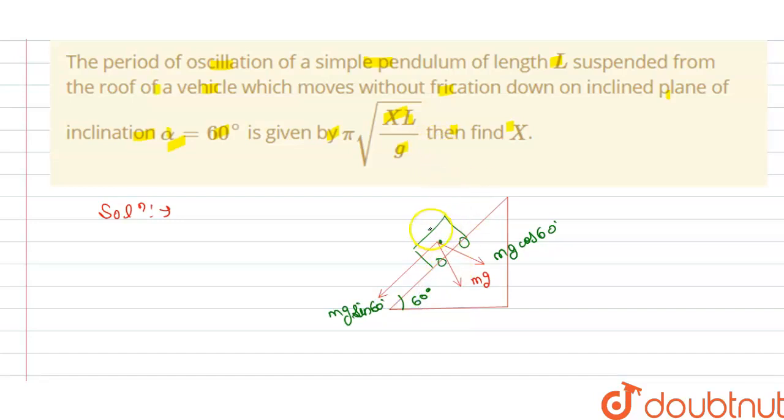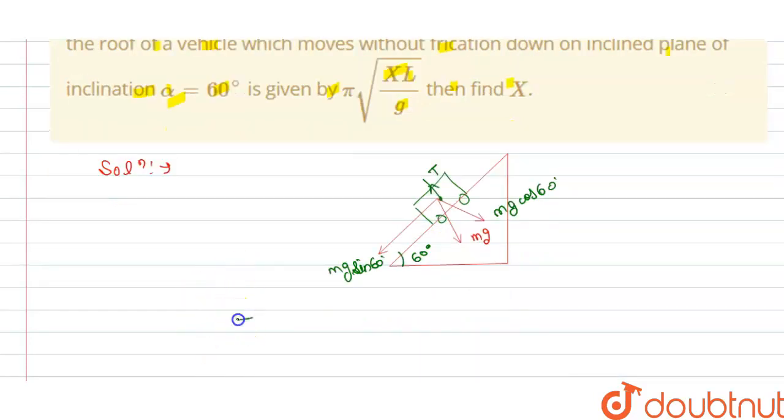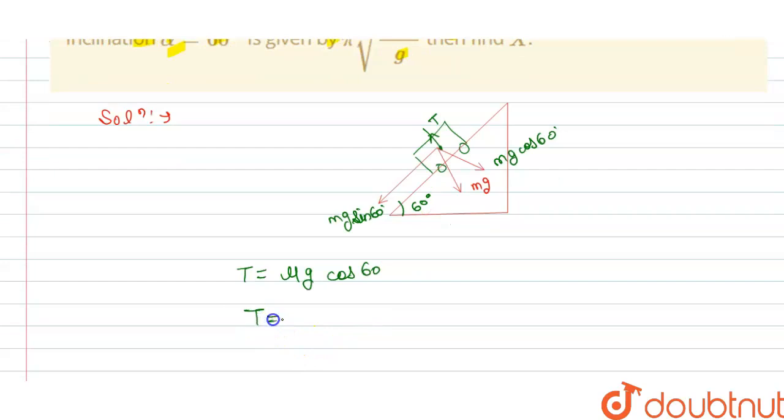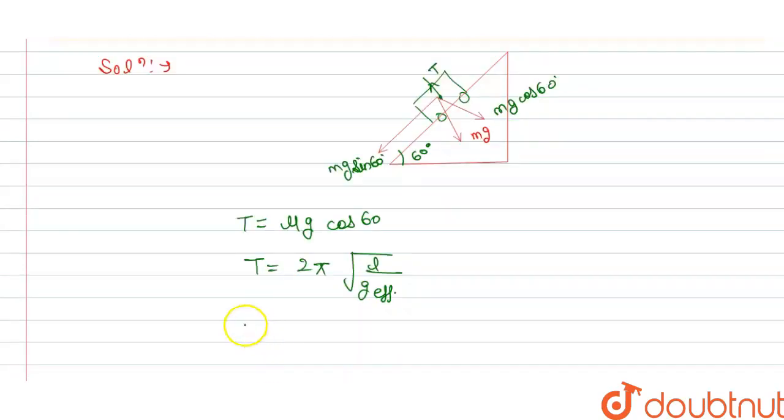The tension T is acting in this direction. From this we can say that T equals mg cos 60. The time period is T = 2π√(l/g_effective), where g_effective is the effective acceleration due to gravity. We have g_effective equals tension T divided by m.